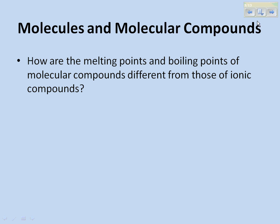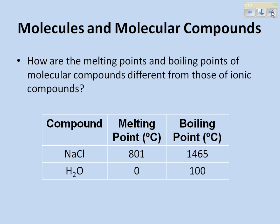Molecules and molecular compounds — how are melting points and boiling points in molecular compounds different from those of ionic compounds? If you study this chart, notice that NaCl is your ionic compound and H2O is your molecular compound. Notice the melting point for the ionic compound NaCl is quite high. That attraction between sodium ions and chloride ions is quite strong, and it takes a lot of energy to break it.